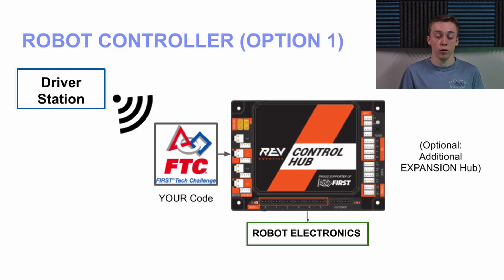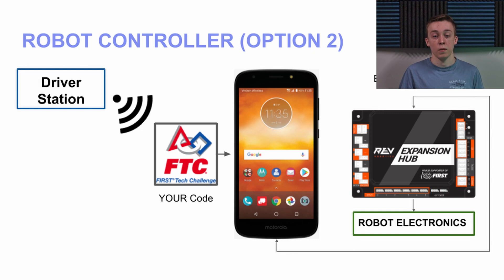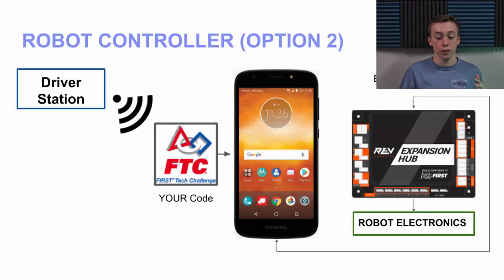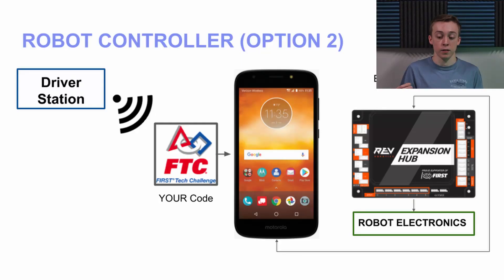If you want more motor ports — since you're allowed up to eight — you have to buy a REV Expansion Hub, which connects to the Control Hub but does not run Android; it merely gives you more ports. The other option, which all teams used in past years, is an Android phone as the robot controller. The driver station talks to this phone via Wi-Fi Direct, the phone runs your code, and it's attached to a REV Expansion Hub. You need two expansion hubs to have all eight ports — one plugged into the phone and another daisy-chained to it.